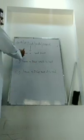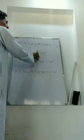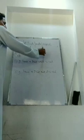Dear students, 'I have a red shirt.' Here 'I' is the subject and the rest of the sentence is the predicate. How many subjects are found in this sentence? Only one subject and one predicate.